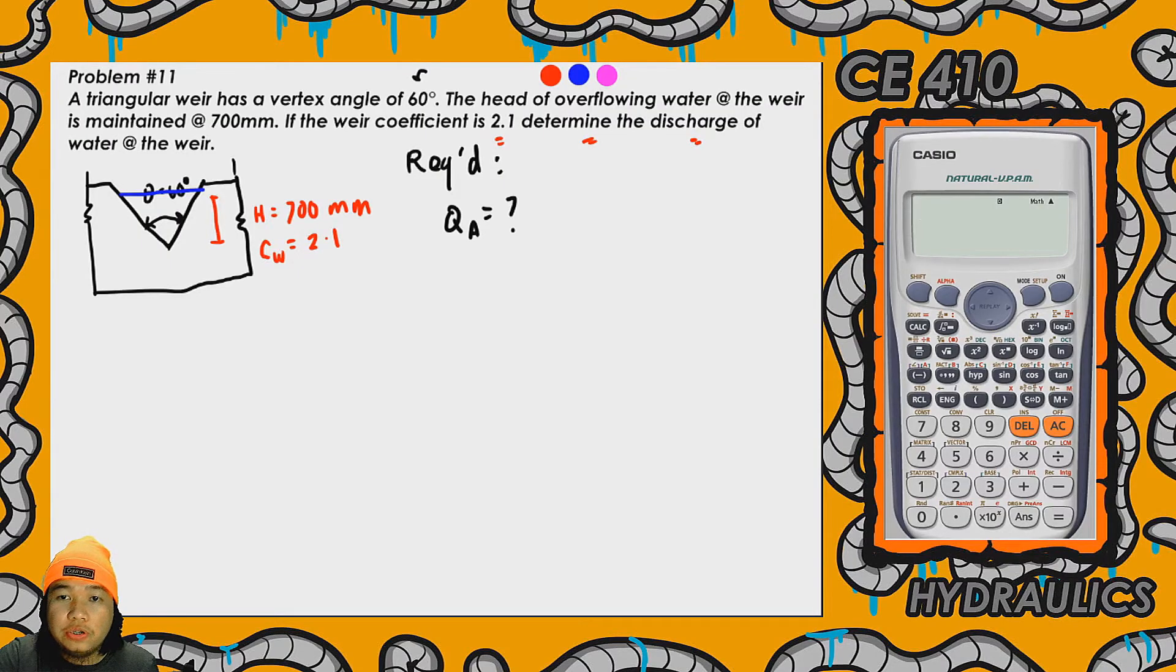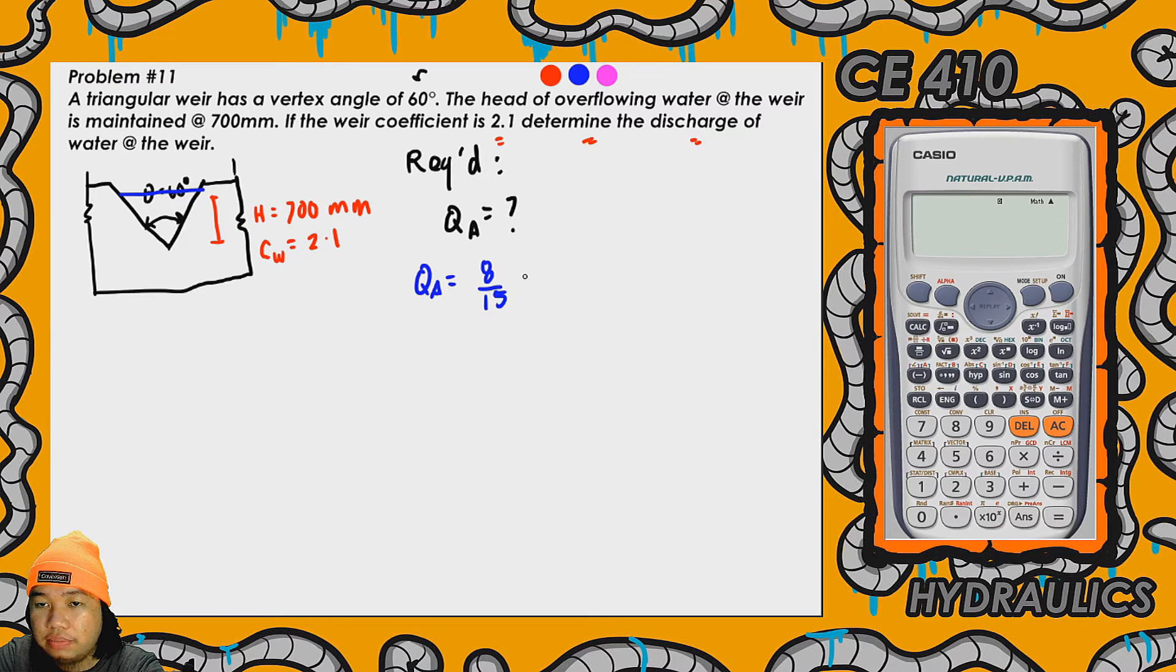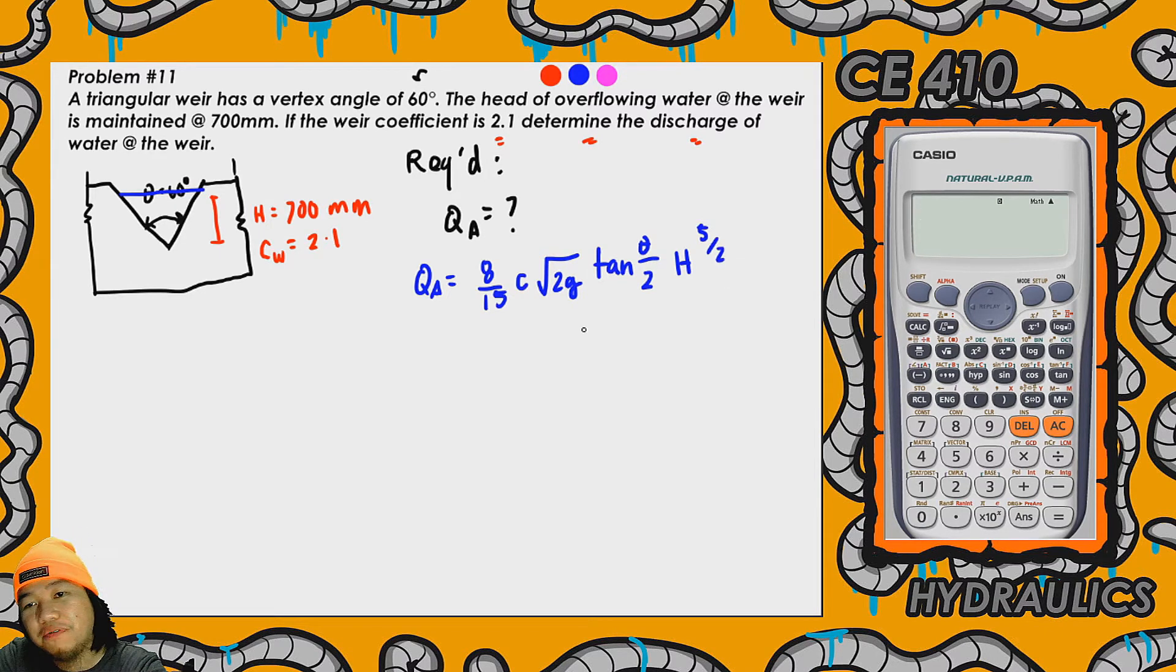Let's go. So let's compute for the value of the actual discharge. So bagayin ko lang yung color ng pen. So yung formula natin for actual discharge is 8 over 15 times C times the square root of 2g times tangent of the vertex angle over 2 times h, o yung head raised to 5 halves. So medyo mahaba yung formula natin para sa triangular weir. Kaya lang mapapansin nyo hindi naman given dito yung C. C is not given.